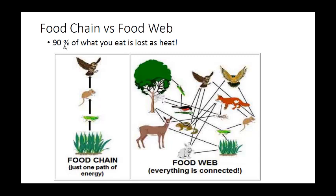A food chain shows what did eat what. But 90% of what you eat is lost as heat — think about that. It's a little less for reptiles because they're cold-blooded, but for warm-blooded animals, most of what we eat is burnt off as heat — not used to grow, reproduce, or move, but just to maintain body temperature. If the grass has 1,000 units of energy, 90% is lost when the grasshopper eats it, leaving 100 units. The mouse gets 10 units, and the owl gets just 1.